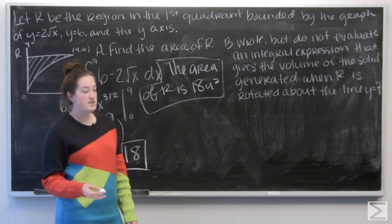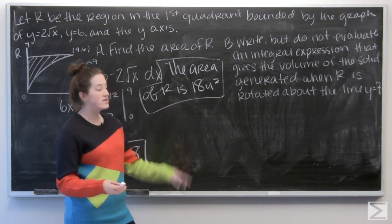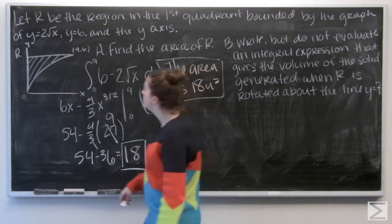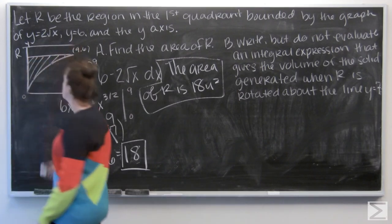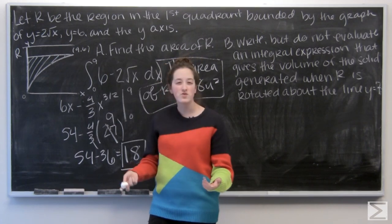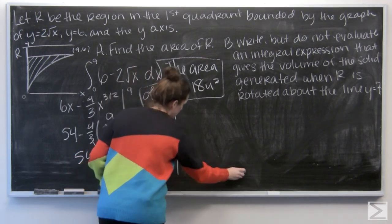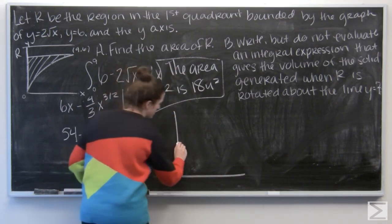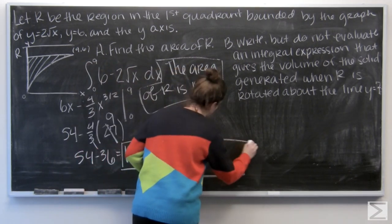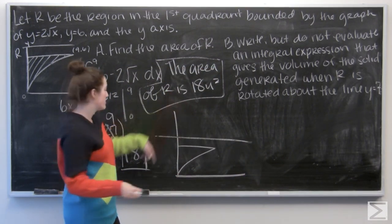Part B asks us to write, but not evaluate, an integral expression giving the volume of the solid when R is rotated around the line y equals 7. Adding y equals 7 to the picture, it sits above the region without touching it. When we rotate the region around that line, it creates a solid — like a sideways volcano shape — which we can approach using the washer method.